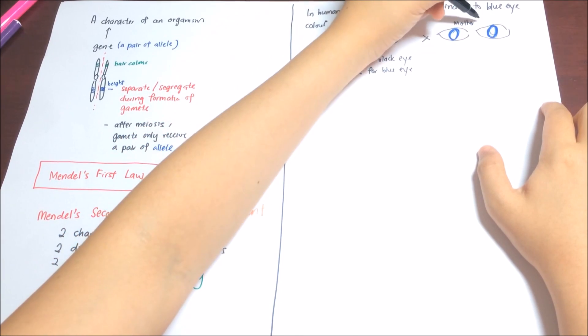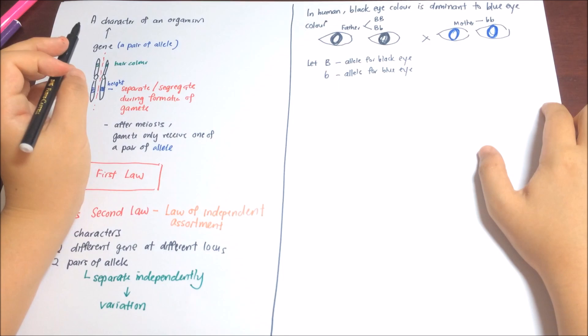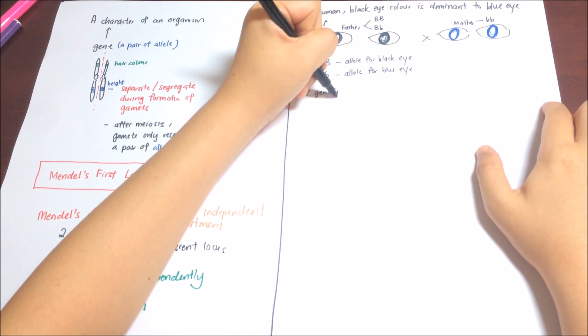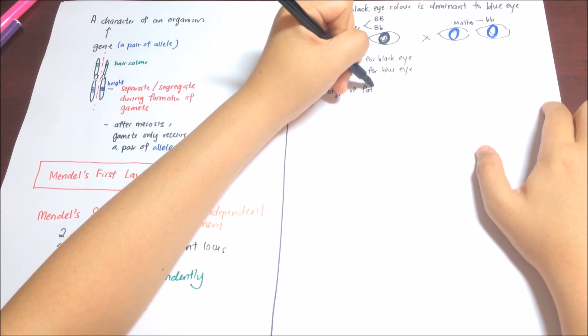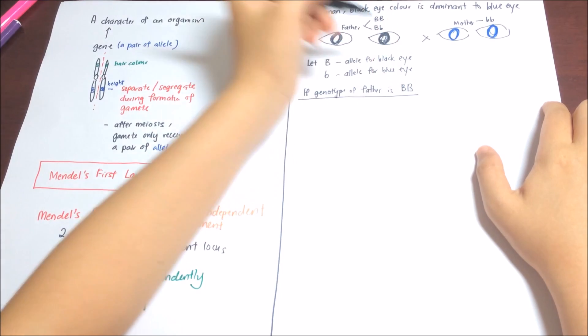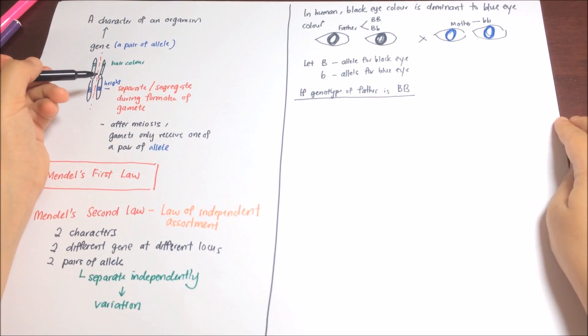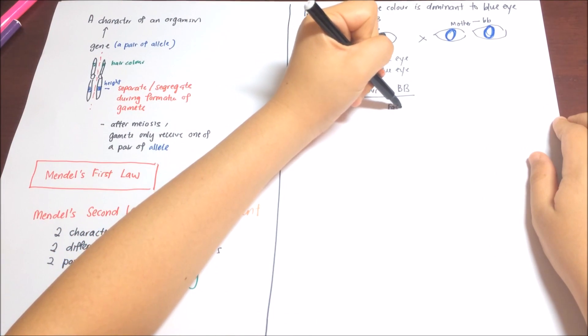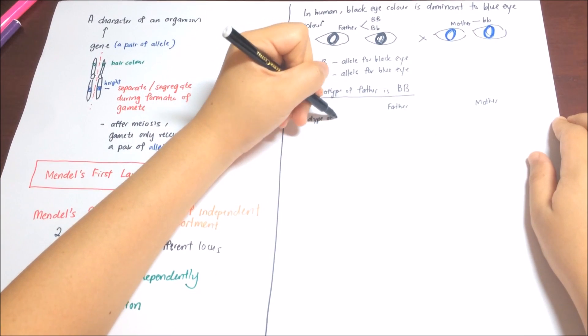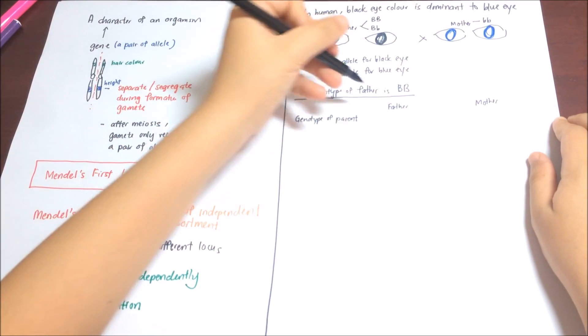What could be the genotype of father? Remember, in the previous video, we learnt that dominant allele will show the effect, either when it stands alone, or it occurs in pair with another dominant allele. So, the genotype of father could be homozygous dominant or heterozygous dominant.